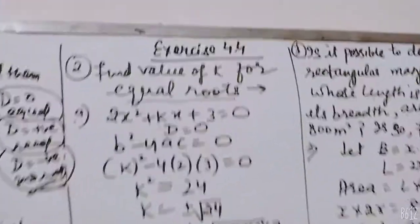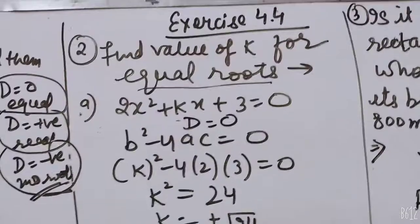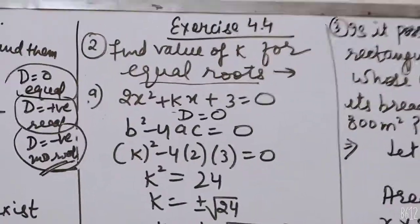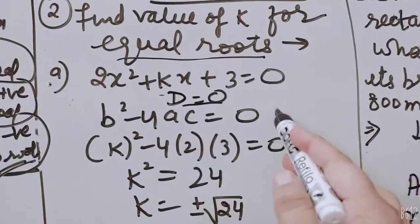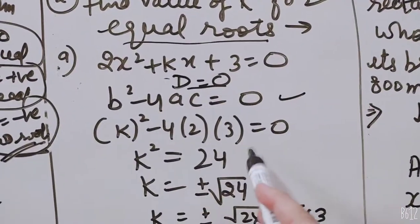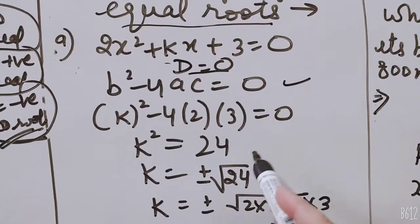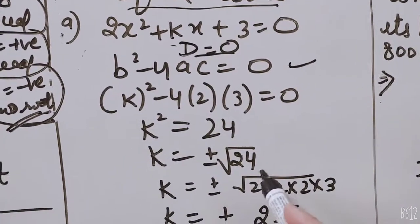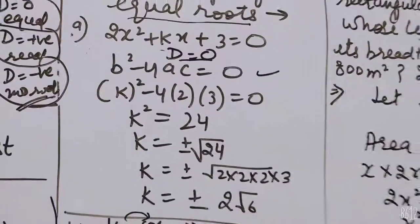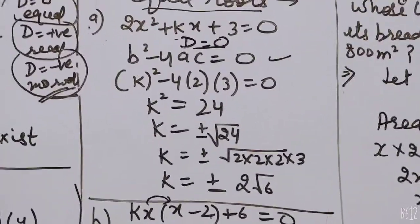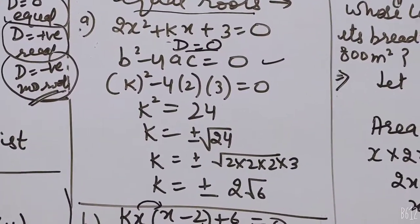Second question, find value of k for equal roots. Equal roots means D is equal to 0. b squared minus 4ac equals 0. k squared minus 4 into 2 into 3 is equal to 0. k squared is equal to 24. k equals plus minus 2 root 6.